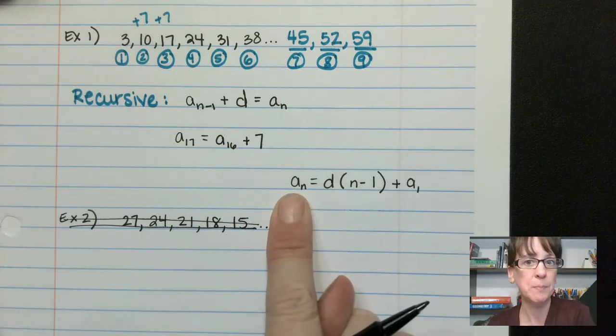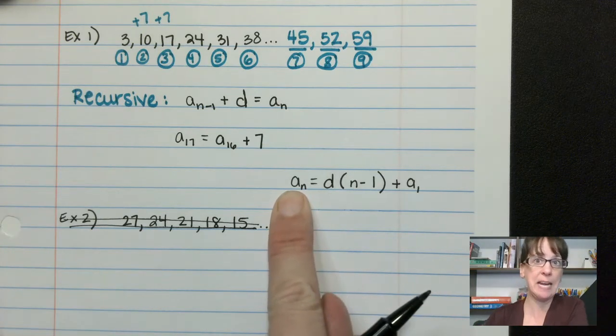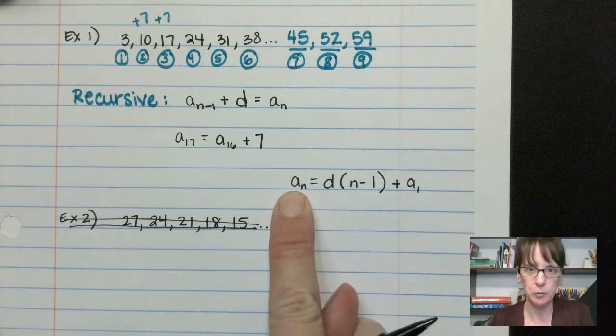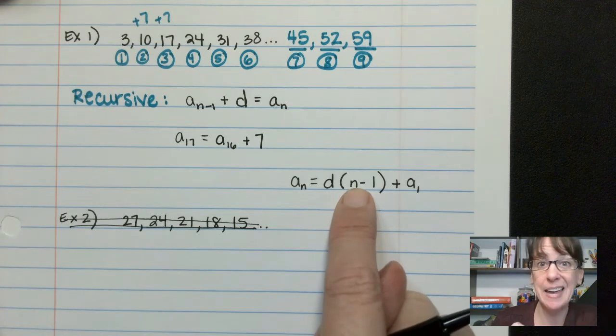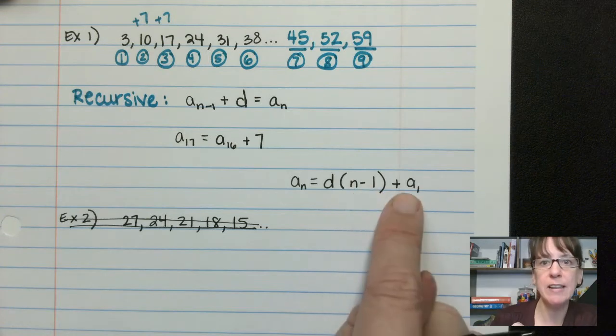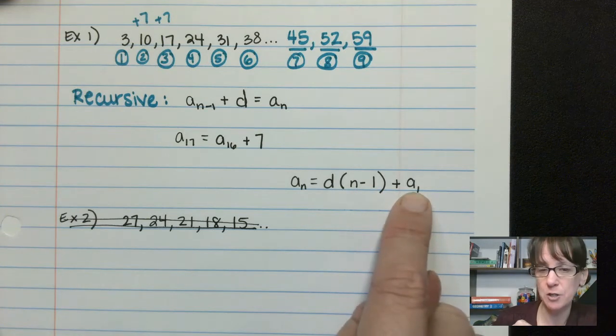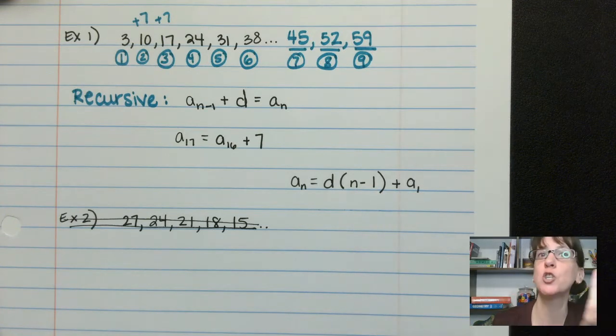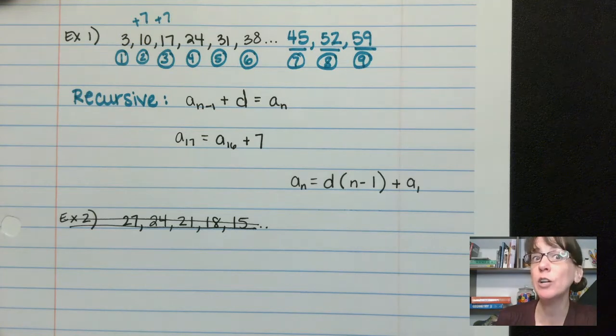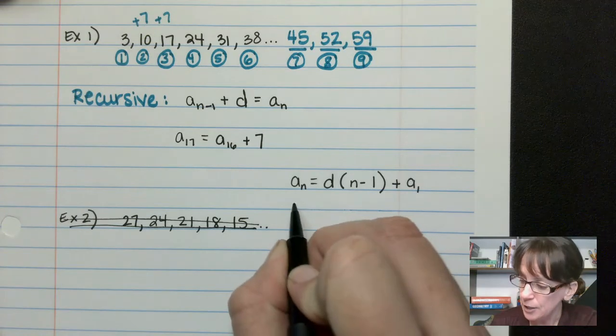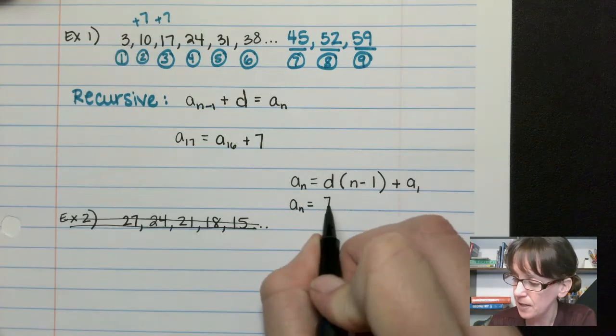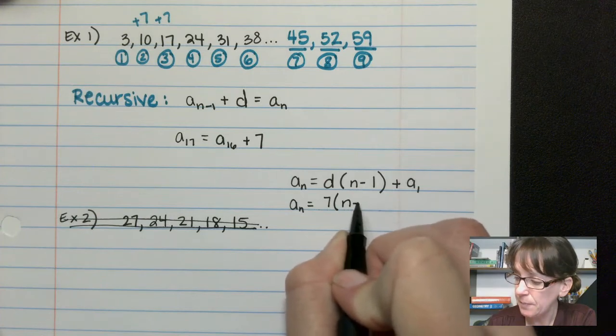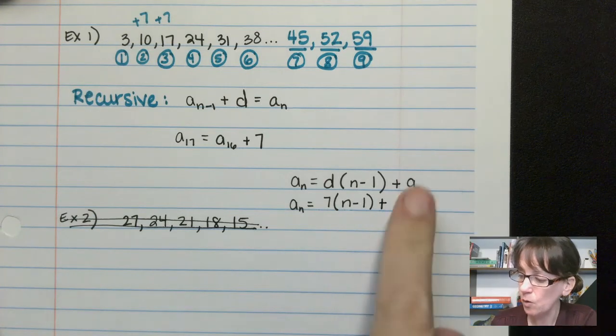So here's what this is saying. We're saying, hey, find that position number. I want to know what happens in position 22, right? You take your common difference. You take the position number 22, the n, and minus one, and then you add whatever happens in the first position. So let's make up our generic rule first, and then we're going to use that to find out what happens in position 22.